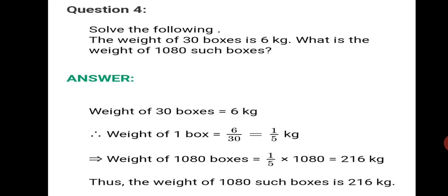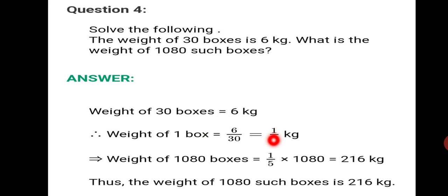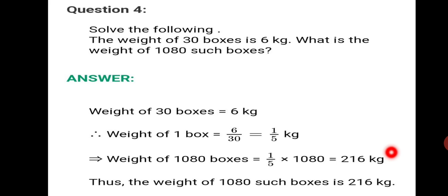Fourth question: The weight of 30 boxes is 6 kg. What is the weight of 1080 such boxes? First statement — weight of 30 boxes equals 6 kg. Weight of 1 box equals 6 divided by 30, which equals 1/5 kg. We got the answer in fraction form. Therefore, the weight of 1080 boxes equals 1/5 multiplied by 1080. When you divide 1080 by 5, you get 216 kg. Thus, the weight of 1080 such boxes is 216 kg.